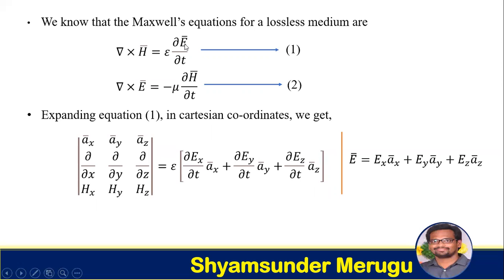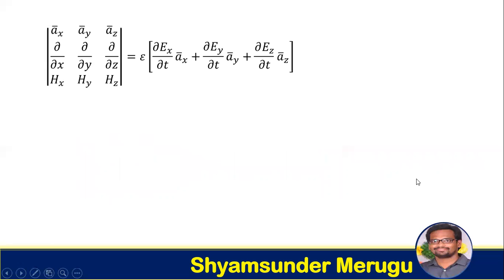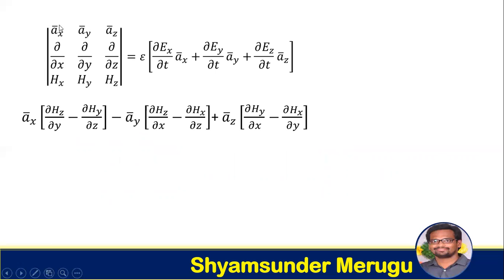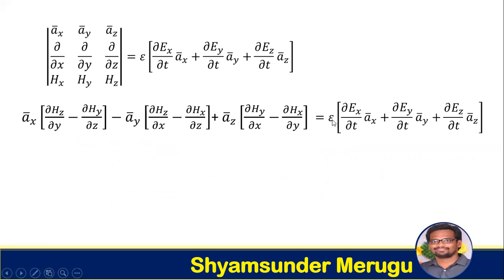E bar is a vector that we can write in Cartesian coordinates as E bar equal to Ex ax bar plus Ey ay bar plus Ez az bar. Calculating the determinant expansion, we get ax bar of (partial Hz over partial y minus partial Hy over partial z) minus ay bar of (partial Hz over partial x minus partial Hz over partial z) plus az bar of (partial Hy over partial x minus partial Hx over partial y), which equals epsilon times (partial Ex over partial t ax bar plus partial Ey over partial t ay bar plus partial Ez over partial t az bar).